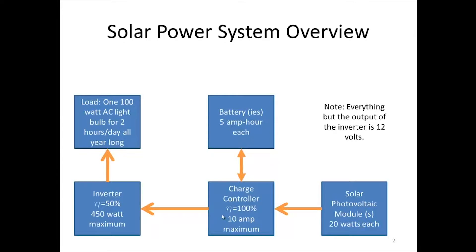We're also going to include batteries in our system. We don't know how many yet. Batteries are rated in amp hours — one amp hour means providing one amp for one hour. Each battery in our system can hold 5 amp hours, so we'll have to figure out how many we need.